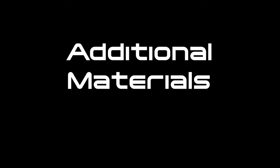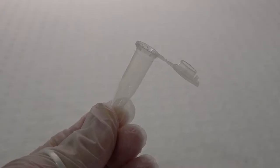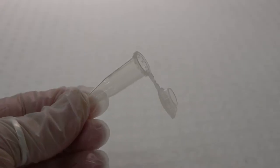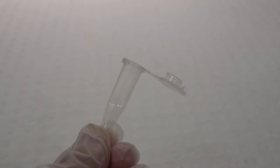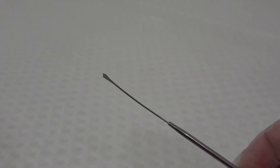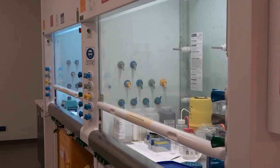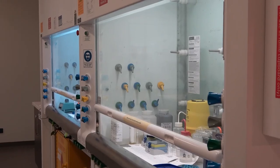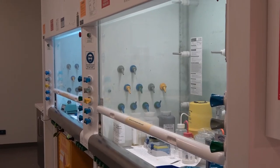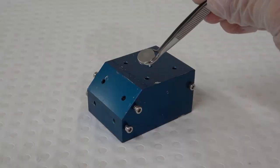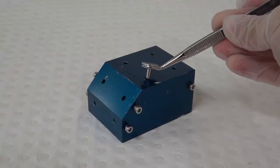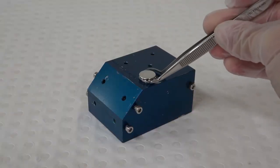Additional materials you may need if preparing dry nanoparticle samples include a microcentrifuge tube, a small spatula, a ducted fume cupboard, and a pin stub holder.